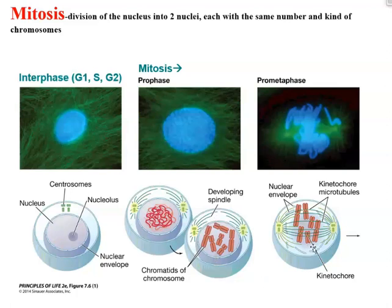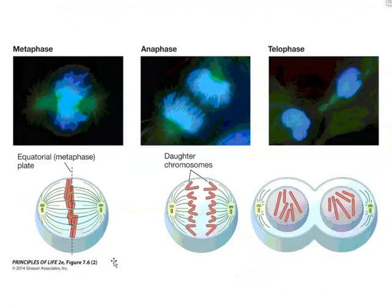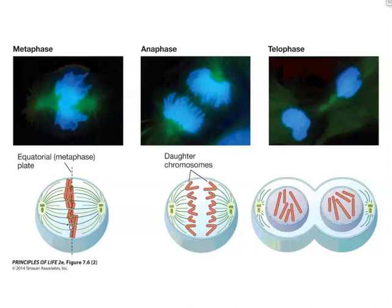In prometaphase, spindle fibers and kinetochore microtubules move chromosomes back and forth, trying to arrange them across the equatorial plate — the center of the cell. That is exactly what happens in metaphase: all chromosomes are perfectly lined up at the equatorial plate. At this point, kinetochore microtubules begin to shorten and break down, pulling the sister chromatids apart. Once separated, they are no longer called sister chromatids; they are referred to as individual unreplicated chromosomes.